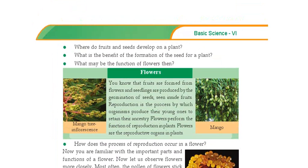How does the process of reproduction occur in a flower? Through pollination. Here you can see a picture of a mango tree inflorescence. What is inflorescence? From each flower it will develop into a mango — each flower changes to a fruit. In each fruit we can see a seed, and by using that seed we can produce new plantlets.